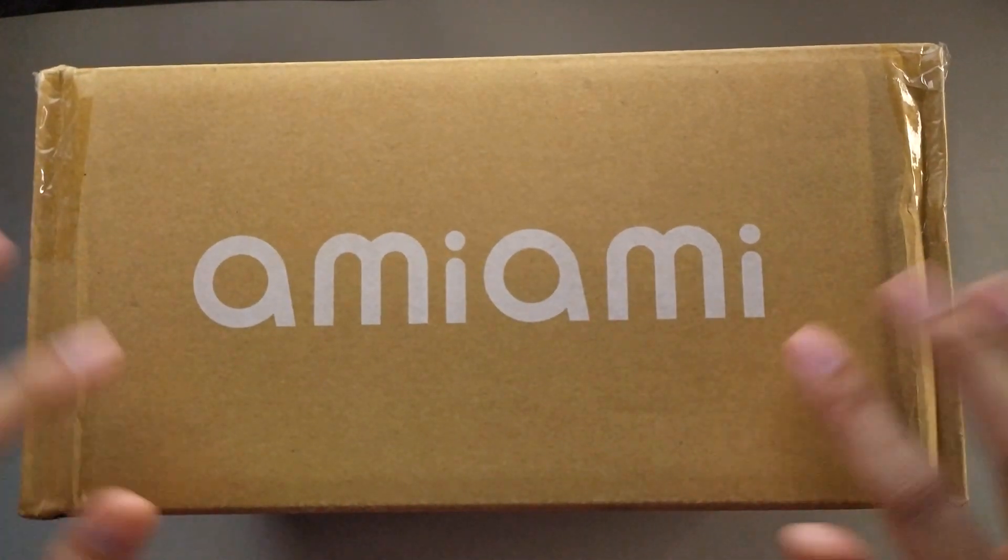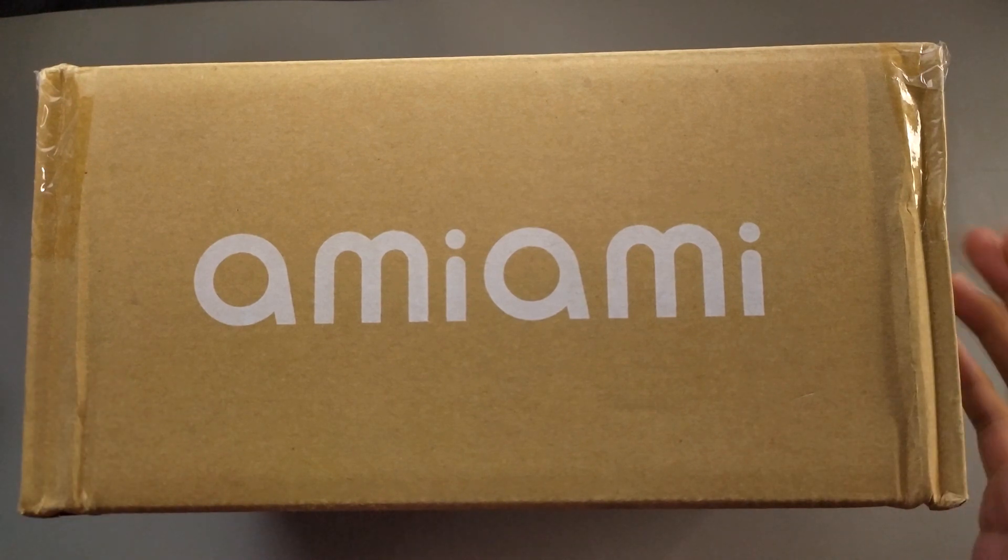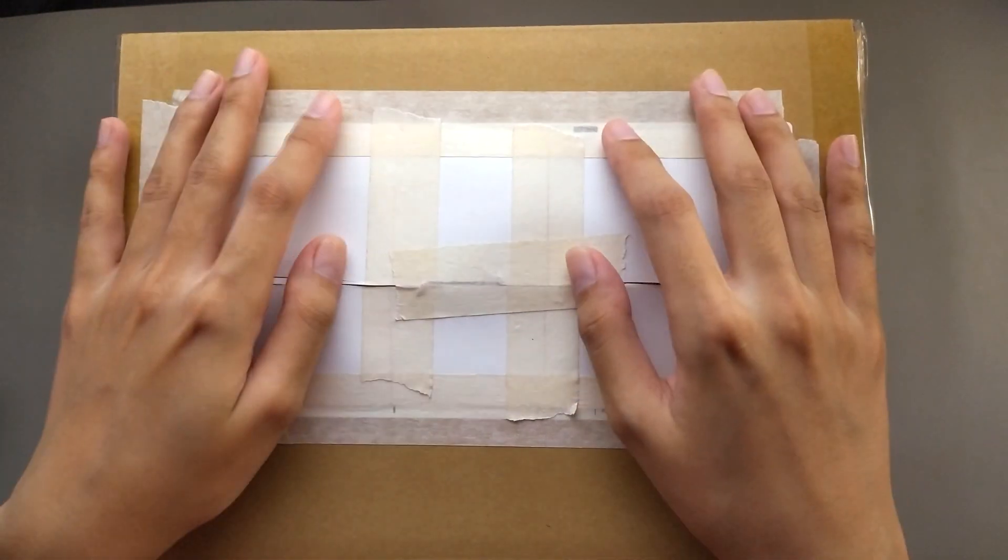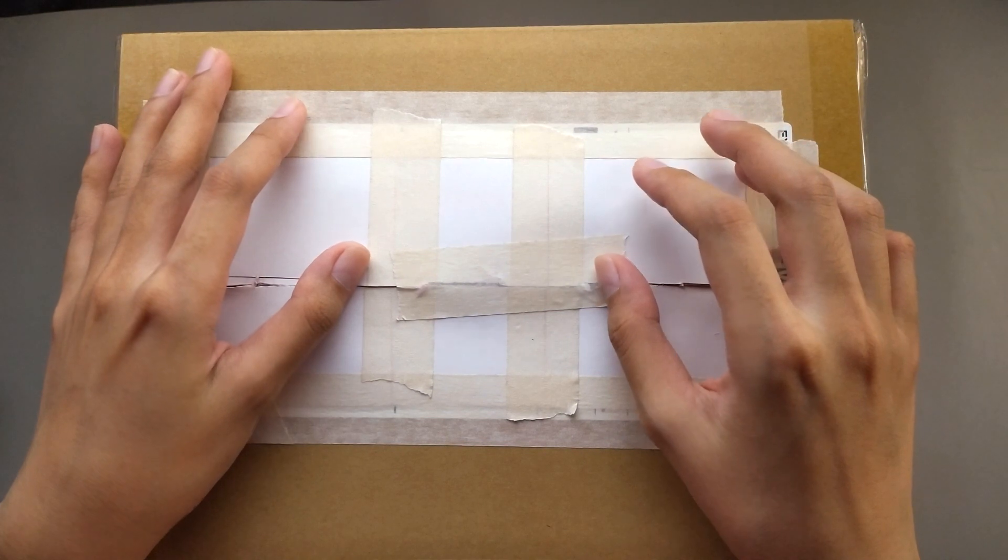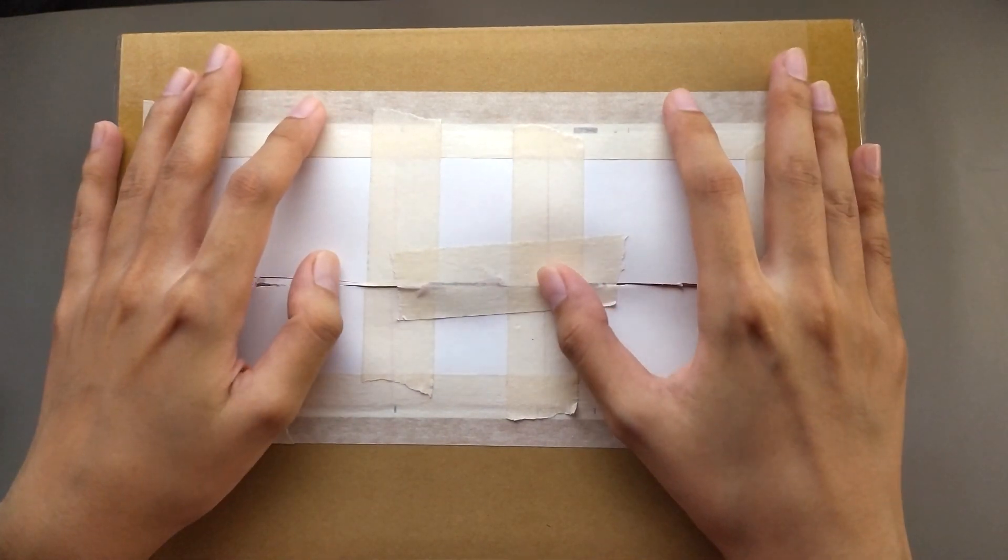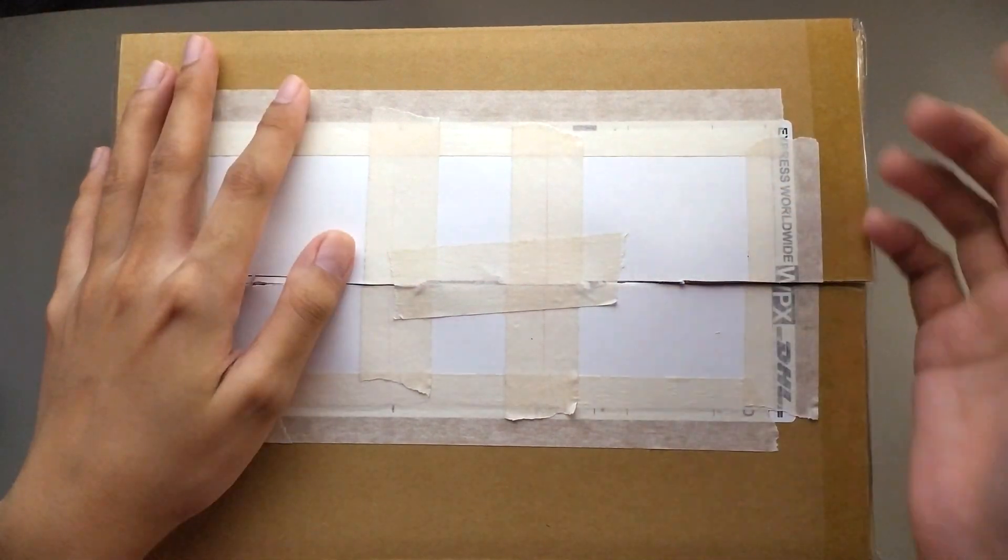This is a package from AmiAmi, which is a toy and figure website. It contains Jimin's tiny tan and the nendoroid figure. Pre-orders for this opened way back in January, but I didn't even know that pre-orders opened. I actually found out from a friend who stans Twice, but he also happens to be a toy collector.